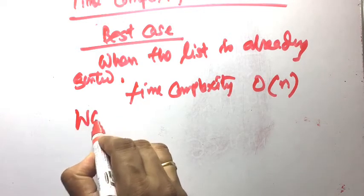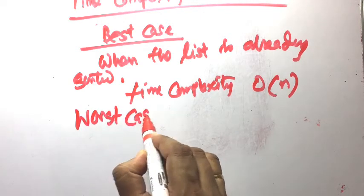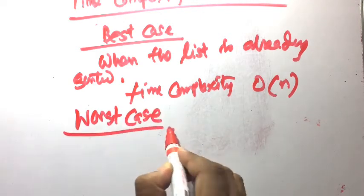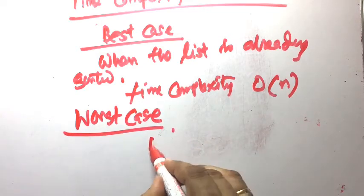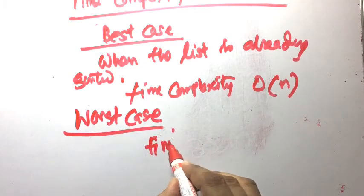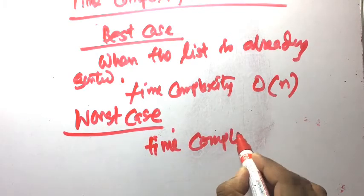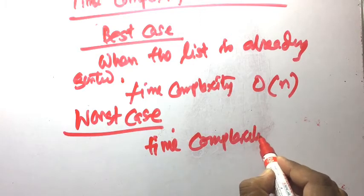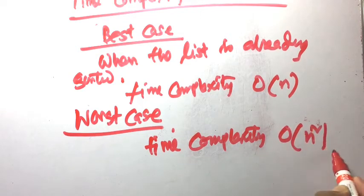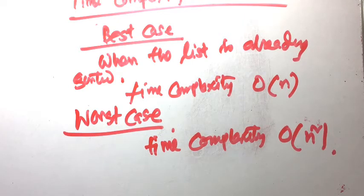Finally, the worst case. Worst case time complexity is the same as the average case — O(n²). Within n passes there are n comparisons, so n times n equals n squared. These are the time complexities of bubble sort: worst case O(n²), best case O(n), average case O(n²).